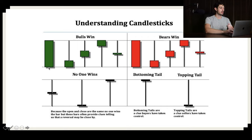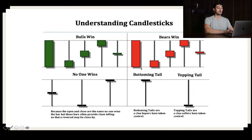The first type: it opened at this price with no tail at the bottom, so the open was the absolute low. And the close was the absolute high because there's no tail at the top either — very bullish candlestick. The opposite version: it opened at the highs and closed at the lows, with no wicks or tails at all.